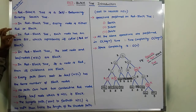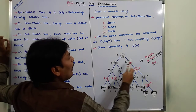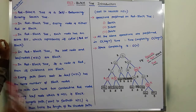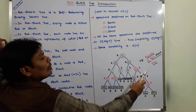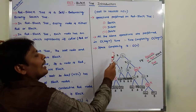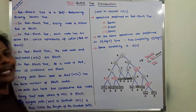In a red-black tree, each node has an extra bit which represents its color, either red or black. Red can be denoted by R and black can be denoted by B. To represent either B or R, we have to use an extra bit for each and every node in the red-black tree.